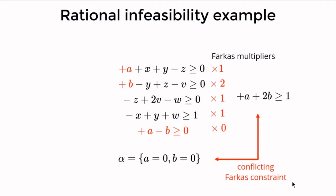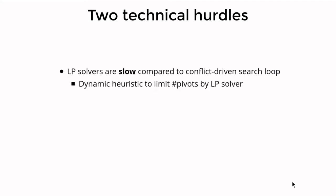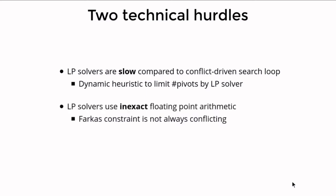In theory this works like a charm, but in practice things get messy. A first issue is that LP solvers are slow compared to the regular conflict-driven search loop. To handle this we limit LP solver calls with a heuristic balancing search conflicts to LP solver pivots. A second issue is that fast LP solvers use inexact floating-point arithmetic. To remain sound, we recalculate the Farkas constraint with exact fixed-precision arithmetic. If the Farkas constraint is not falsified, we reset the LP solver and continue as if no rational infeasibility was detected.